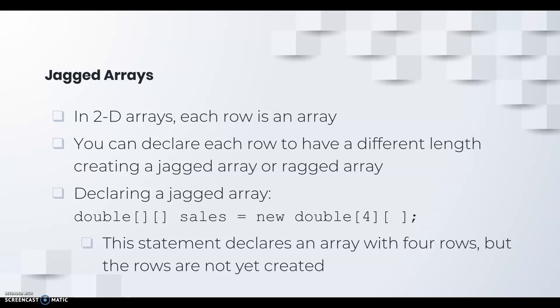You can create what's known as jagged or ragged arrays in Java. In 2D arrays, each row is a separate array. You can declare each row to have a different length, creating a jagged or ragged array.